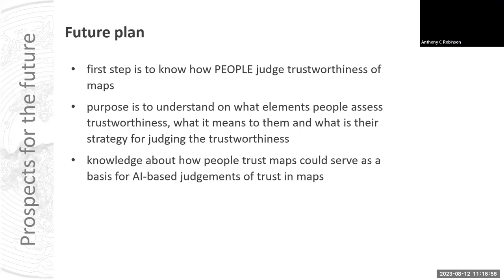Something about my future plan: the first step is to understand how people judge the trustworthiness of maps. After that, we could understand what elements people assess as trustworthy, what that means to them, and what their strategy is for judging trustworthiness. This knowledge could serve as a basis for artificial intelligence judgment of trust in maps.